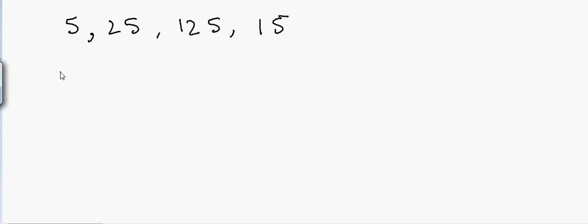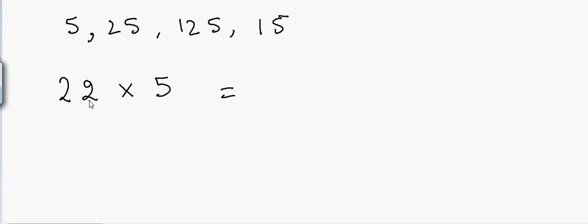In the case of 5, suppose I have the number 22 and I want to multiply it by 5. All I have to do is divide 22 by 2, which gives 11, and then put a 0 at the end. So the answer is 110.